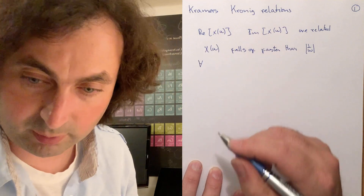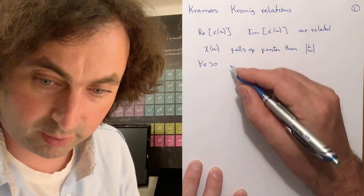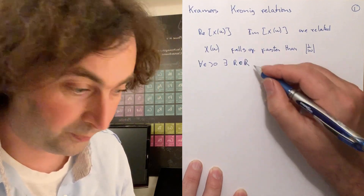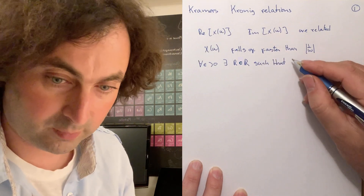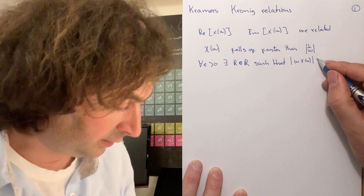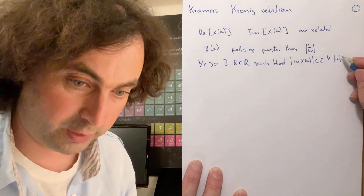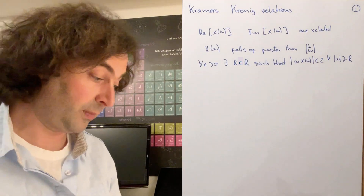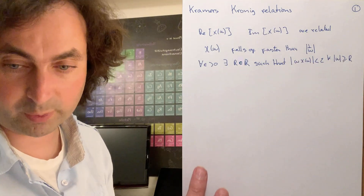You can write this down mathematically: for all ε greater than zero, there is an r in the real numbers such that ω·χ(ω) is smaller than ε for all ω greater than or equal to r. As said, this is an easily fulfillable requirement, because χ(ω) has to fall off as 1/ω².